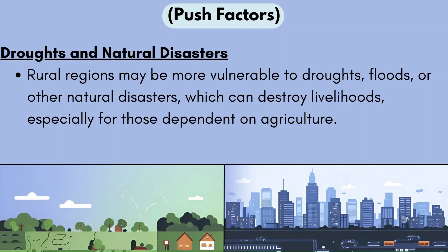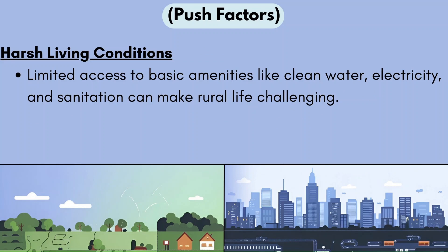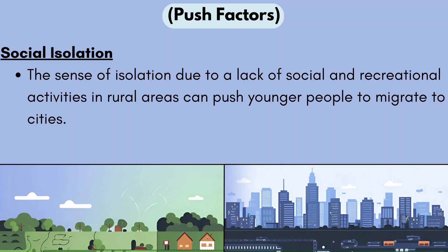Another push factor is droughts and natural disasters. Rural regions may be more vulnerable to droughts, floods, or other natural disasters which can destroy livelihoods, especially for those dependent on agriculture. Floods near rivers can destroy homes. People in rural areas also experience harsh living conditions — limited access to basic amenities like clean water, electricity and sanitation make rural life challenging. Many have to walk very far to get water, and because of these conditions they tend to move to urban areas.